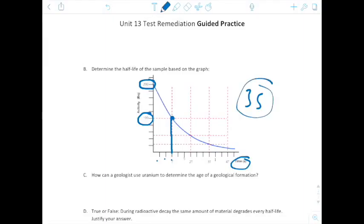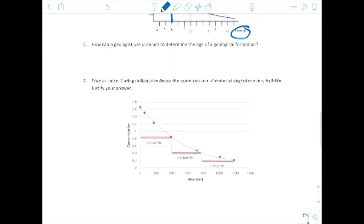How can a geologist use uranium to determine the age of a geological formation? So if we know the amount of time it takes for a single half-life of uranium, what we can do is we can look at the amount of uranium in a sample, and then we can determine from its original composition how many half-lives it took to get there. And we can determine the age of a sample.